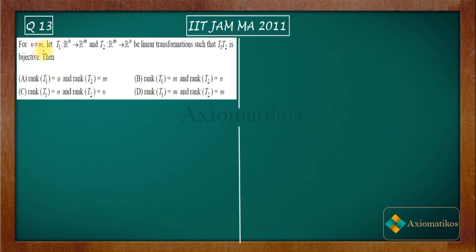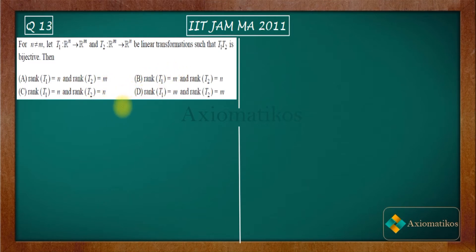For n not equal to m, let T1 be a linear transformation from Rn to Rm and T2 be a linear transformation from Rm to Rn, such that the product T1·T2 is bijective. Option A says rank of T1 is n and rank of T2 is m, and similar options are B, C, and D.